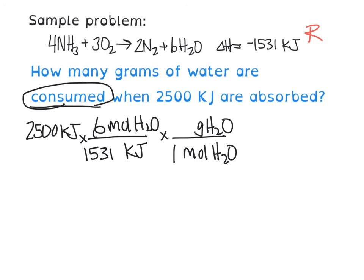Double checking my units, I've got my kilojoules canceled, my moles H₂O canceled. I have my grams of H₂O left. So now all I have to do is actually do the math. The math works out to be 176 grams of H₂O that is consumed when you run this reaction. Now you would not put any kind of sign on your grams of H₂O because having a negative amount just wouldn't make sense.